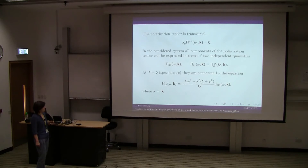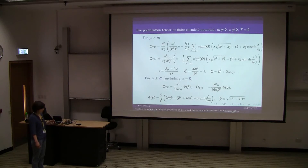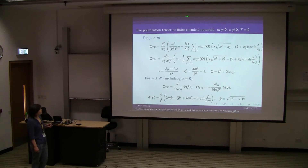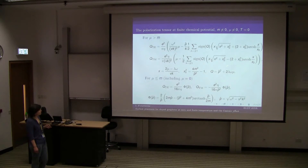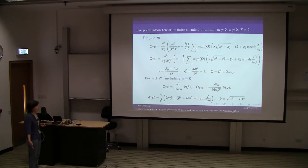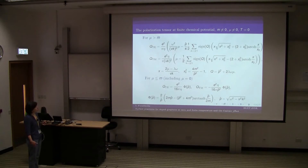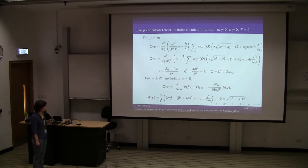These are some properties of the polarization tensor. Now I show some beautiful formulas. First, we start with the case of zero temperature, zero mass, and zero chemical potential. This is the answer for the functions Q which enter the reflection coefficients. These expressions follow directly from the polarization tensor. You can see there are several square roots, and the expressions depend on the mass and on the chemical potential. These are for transverse electric polarization and transverse magnetic polarization.